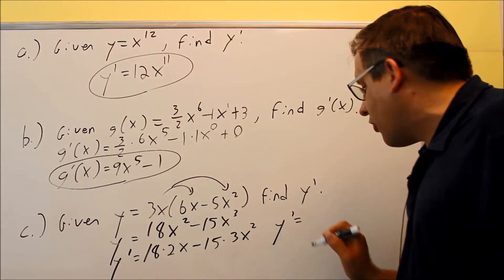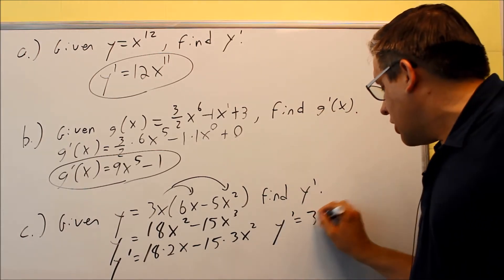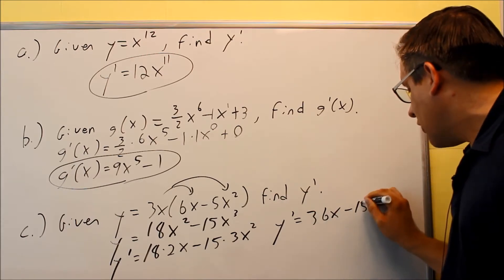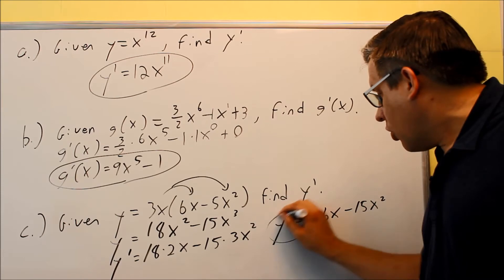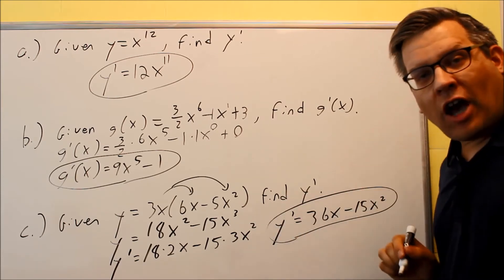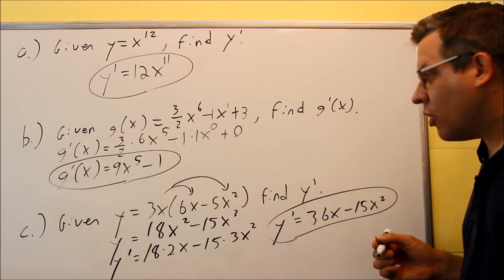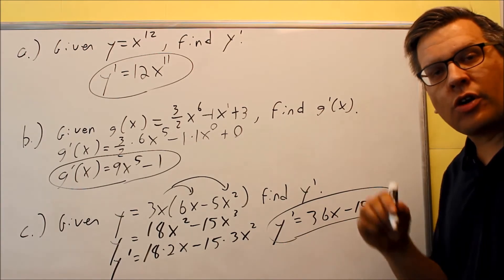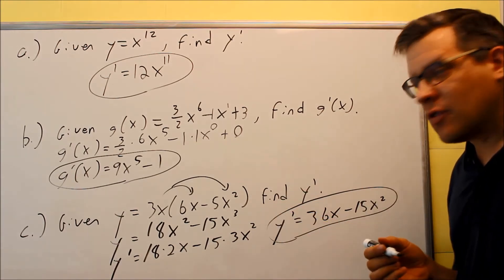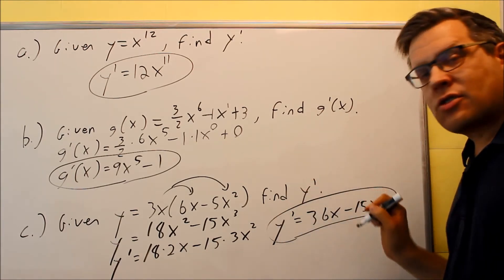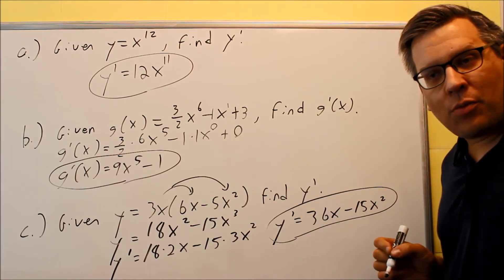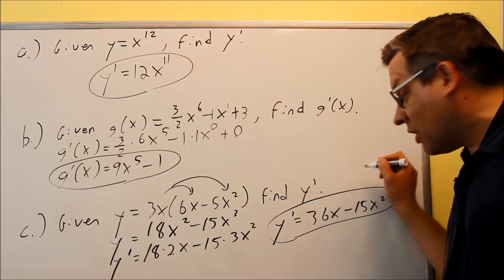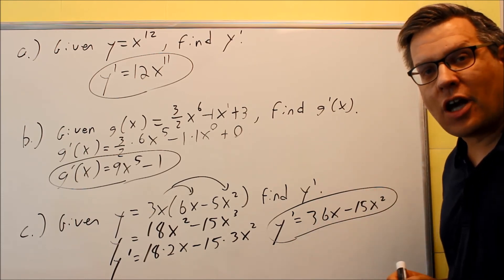The last thing we're doing is just simplifying it. So you're going to get 36x minus 15x squared. And you can either leave your answer like this, or if you'd like to factor it, you could factor that as well. So it all depends on what your teacher requires or what your online homework system requires of you. But you can try putting that answer in online first, and it should mark that one as correct. But again, if somehow it doesn't, then you may have to do a factoring step on that. Thank you.